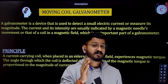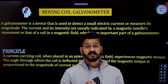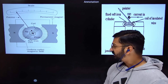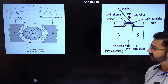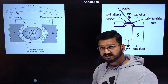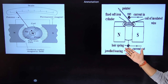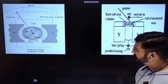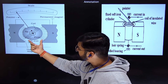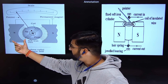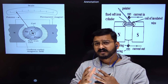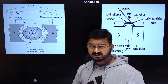Now let's understand the construction of the galvanometer — what components are required. There are two figures on the screen: the first is the top view of the moving coil galvanometer and the second is the front view. You can see that there is a soft iron core placed between the north and south poles inside a strong magnetic field.